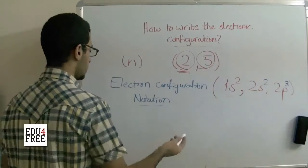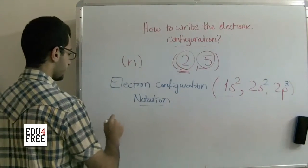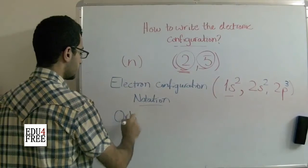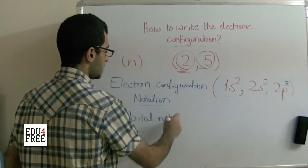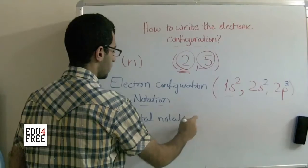The last method is the orbital notation, and this is based on Hund's rule.